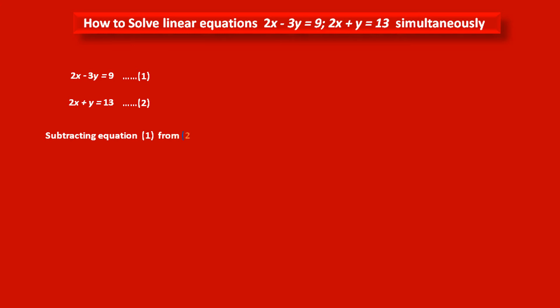So, subtracting equation 1 from 2, we get... First we have to write equation number 2: 2x plus y equals 13, because its coefficients are comparatively greater than that of equation number 1.